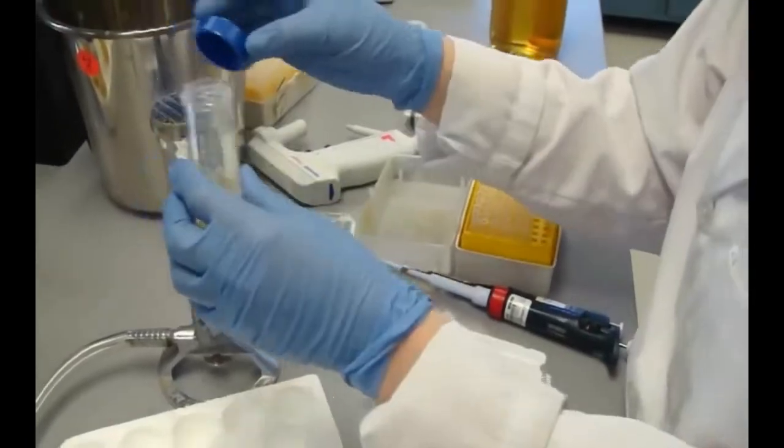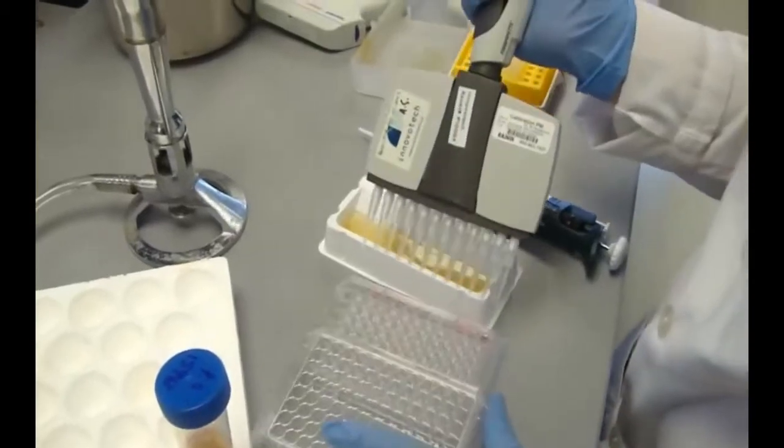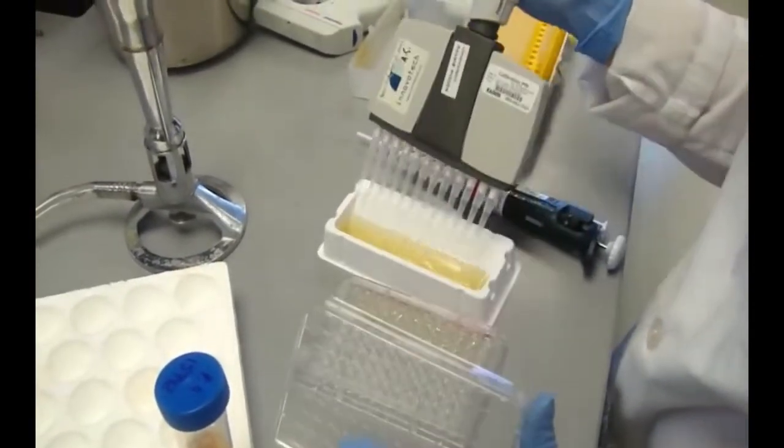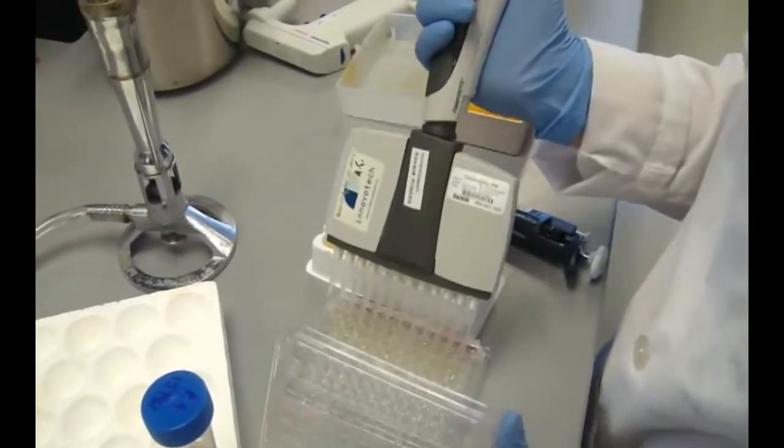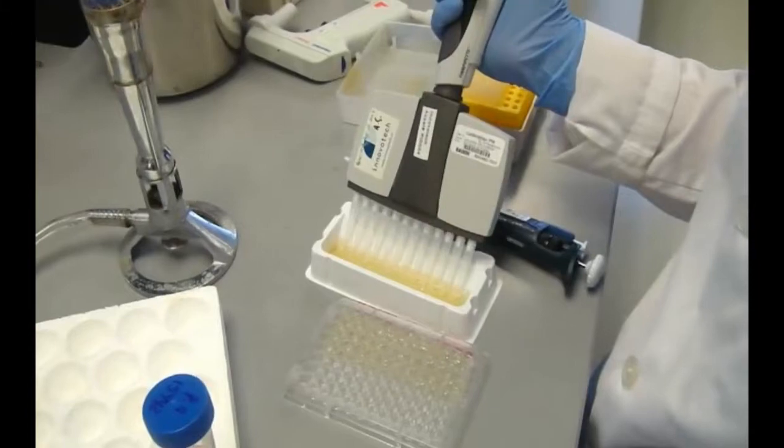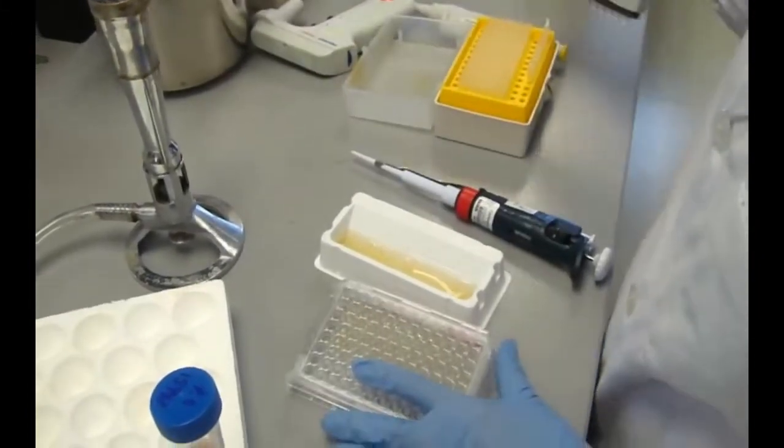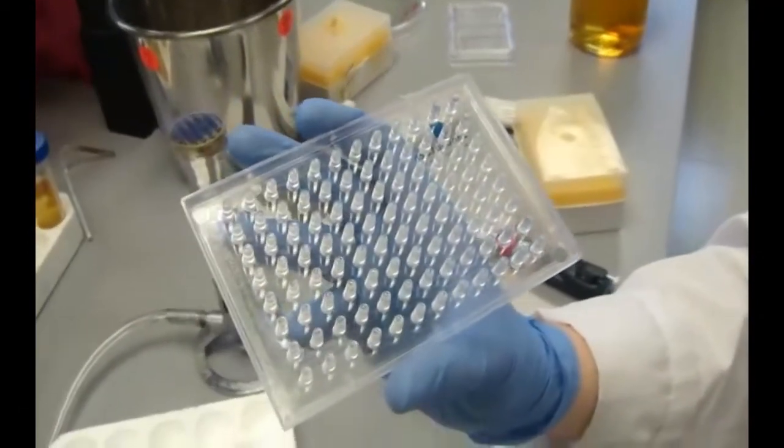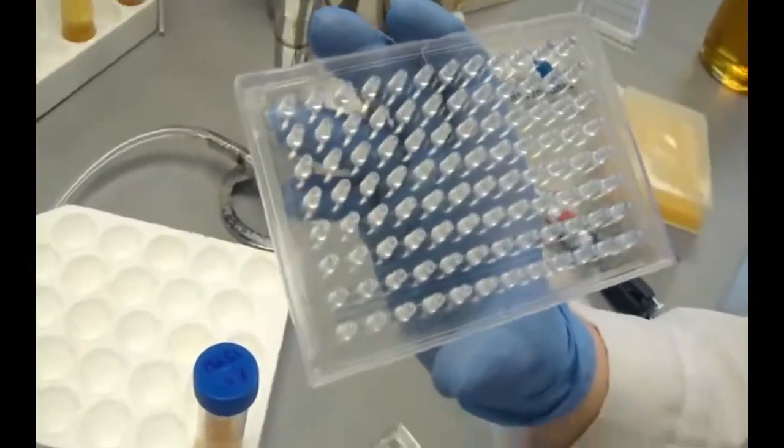150 microliters of the inoculum is added to each well of a 96-well microtiter plate excluding sterility control wells. 150 microliters of sterile media is placed into the sterility control well. A lid containing 96 pegs is placed onto the microtiter plate.